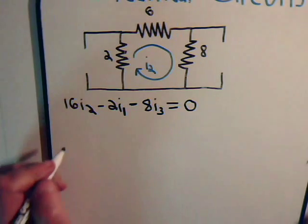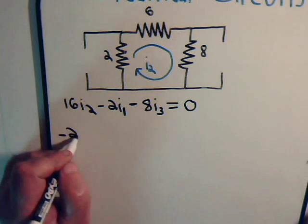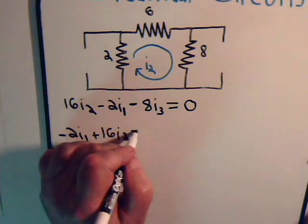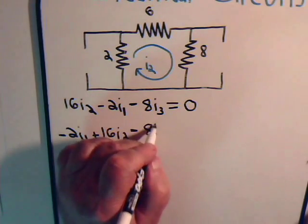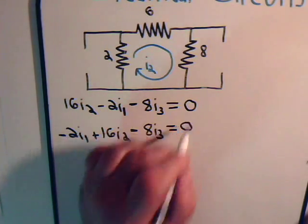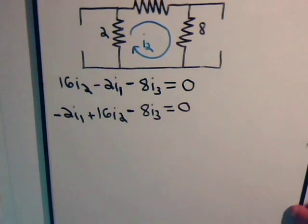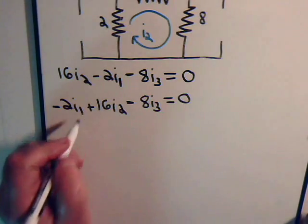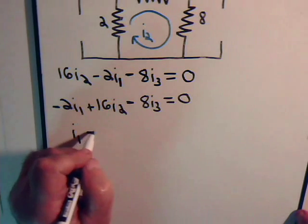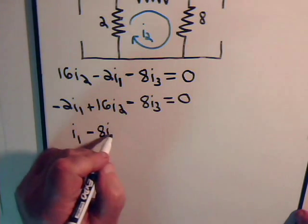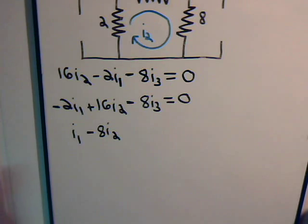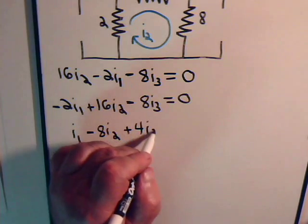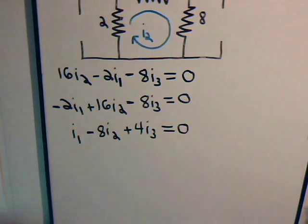So here we have minus 2 I1 plus 16 times I2 minus 8 times I3 equals 0 and let's divide through by negative 2 so we have I1 minus 8 times I2 plus 4 times I3 equals 0.